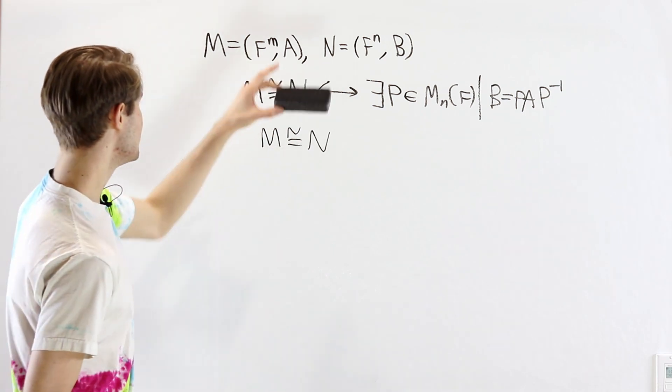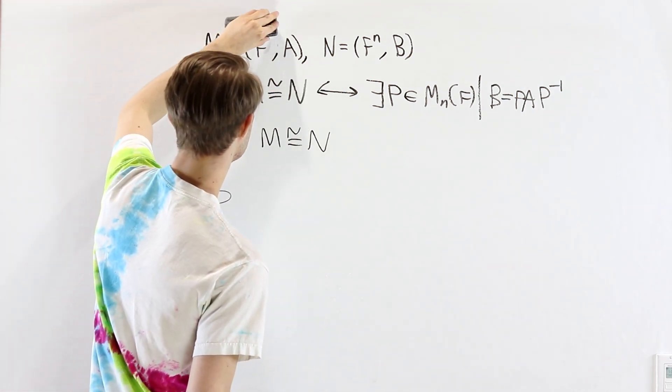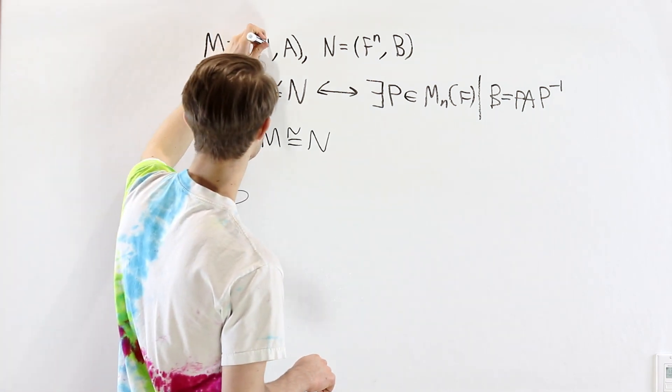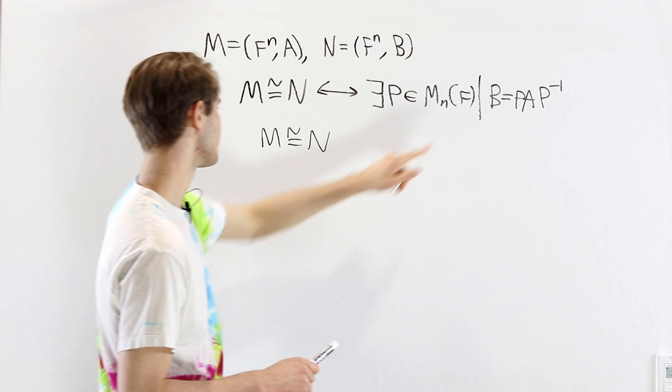Instead of writing F to the m and F to the n, we can describe both of them using just one letter. So I'm going to use n in this case because we have our n by n matrix over here.